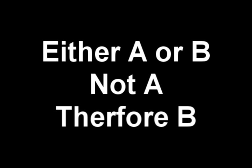Disjunctive syllogism. Either A or B. Not A, therefore B. The proposition A or B has to be that either A or B is true. In other words, one of these must be true for this to be a valid form of DS.